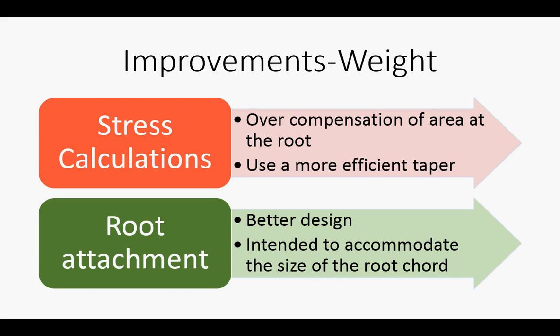A taper along the outer third of the blade, where the majority of the power is generated, combined with a non-taper along the rest of the blade would have sufficed. Finally, the blade's root attachment to the hub could have been better designed to reduce weight, since it was primarily intended to accommodate the size of the root chord in order to reduce drag.